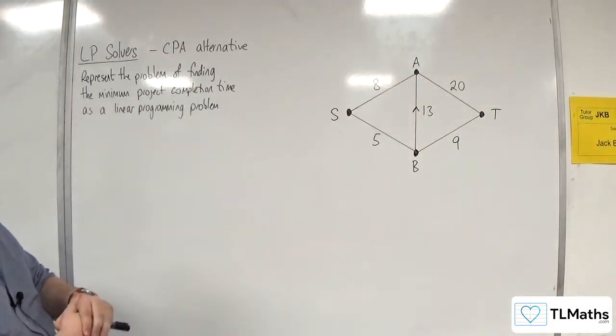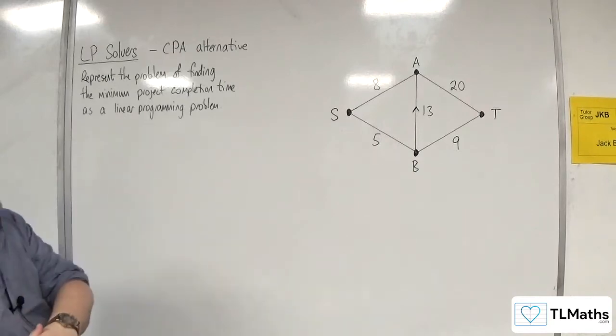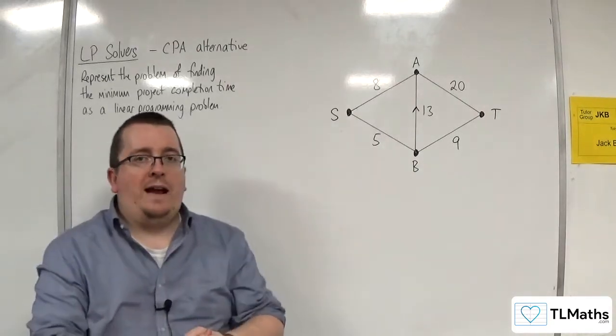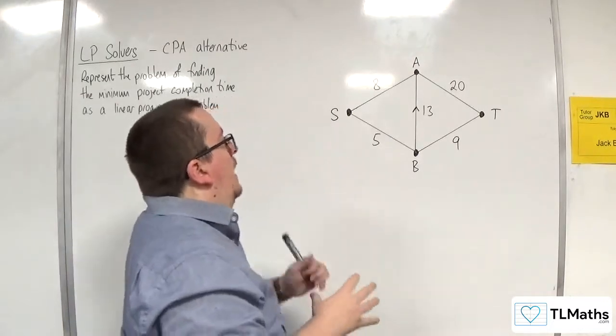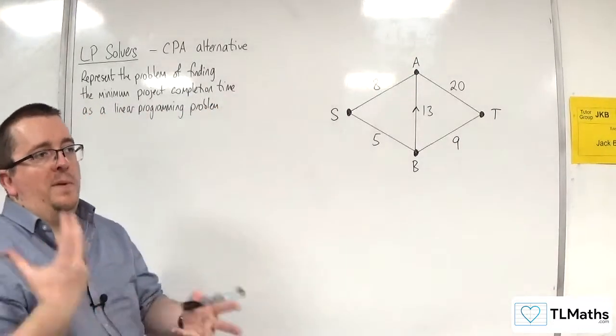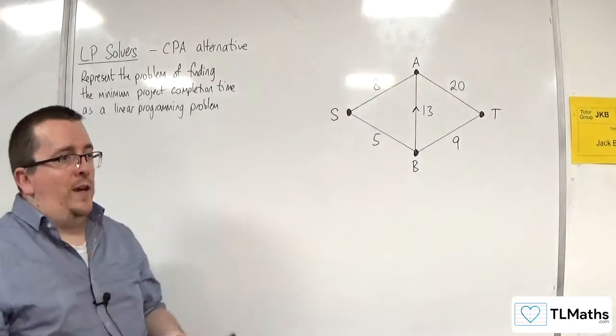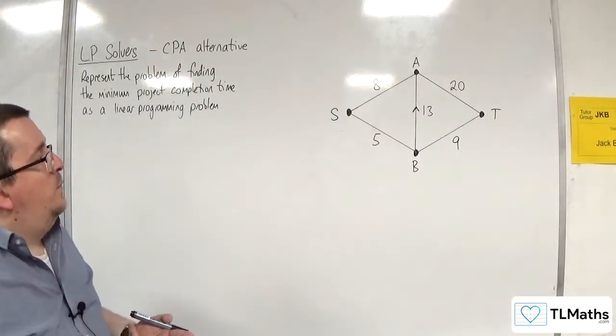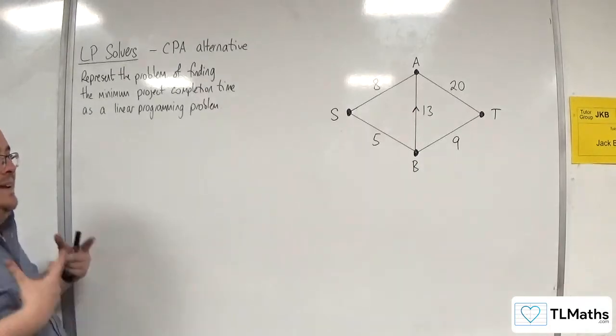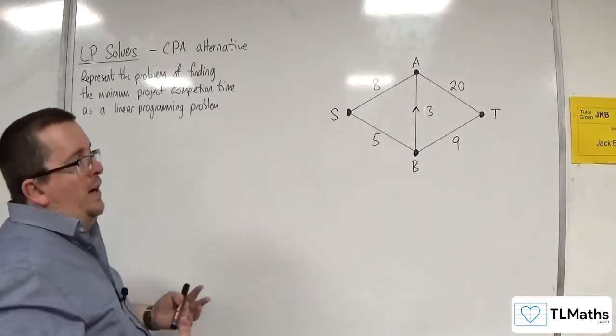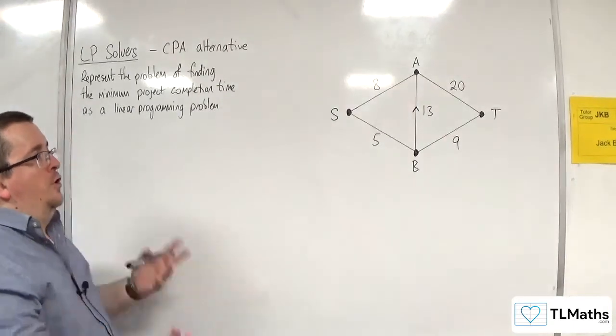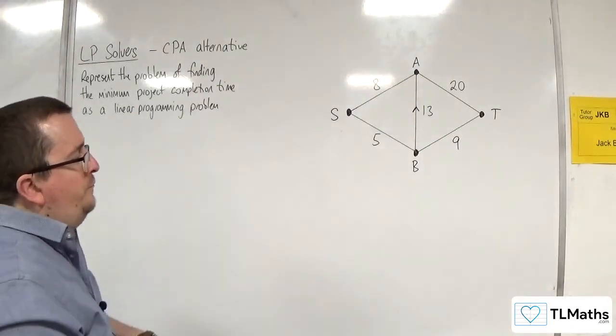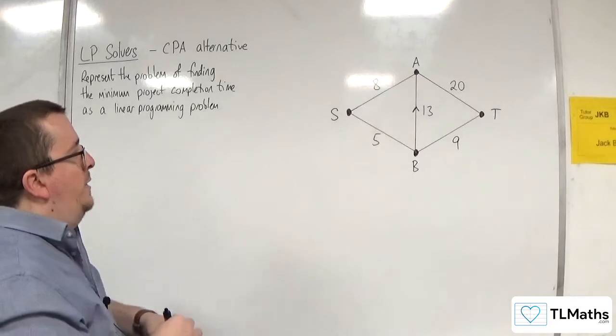What I'm going to do here is we're first of all going to consider it as a critical path problem. We're going to work out what the earliest completion time or latest completion time is for each of the vertices. And then we're going to take a look at another way of actually writing down the linear programming problem that could be used to solve it. So there is this alternative that we need to be aware of.